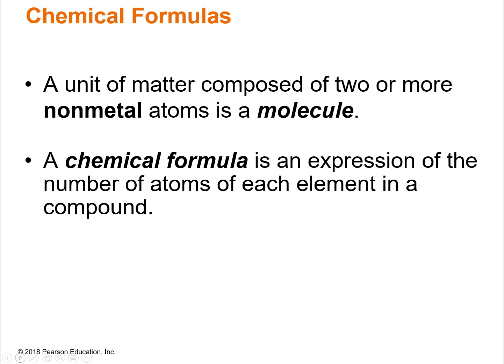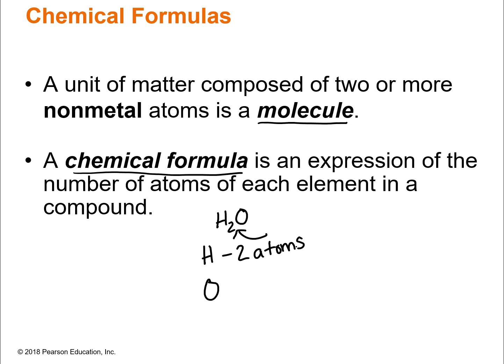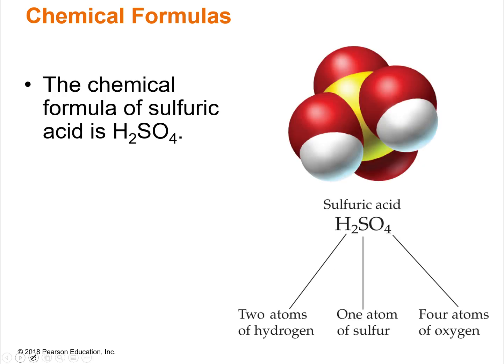To talk about the components of a compound, we need to talk about chemical formulas. A molecule is a unit of matter composed of two or more non-metal atoms. A chemical formula is the expression of the number of atoms of each element in a compound. Take water — H₂O. There's a subscript 2 that tells us there are two atoms of hydrogen. There's no subscript on the O, so there's an implied one atom of oxygen.